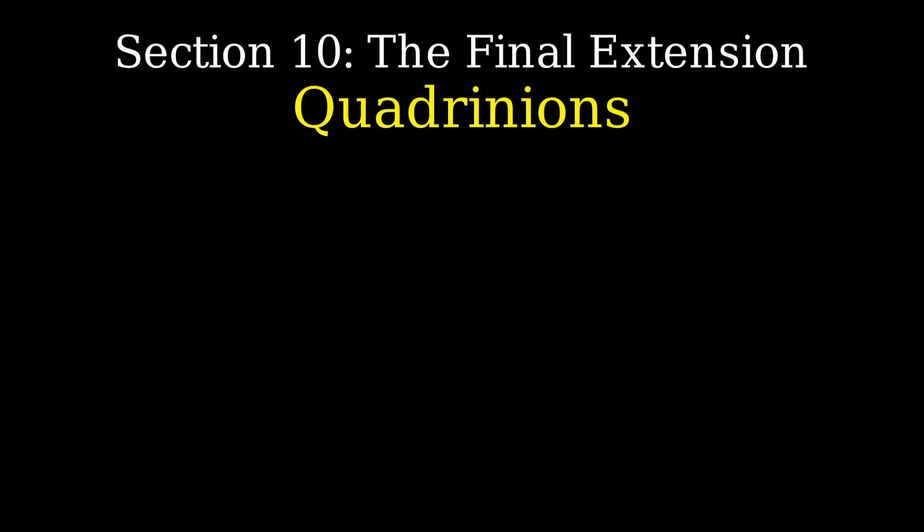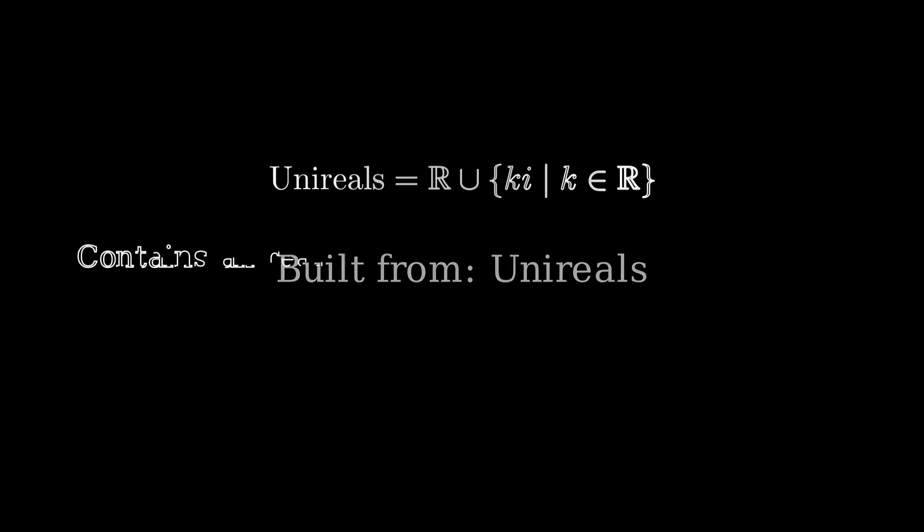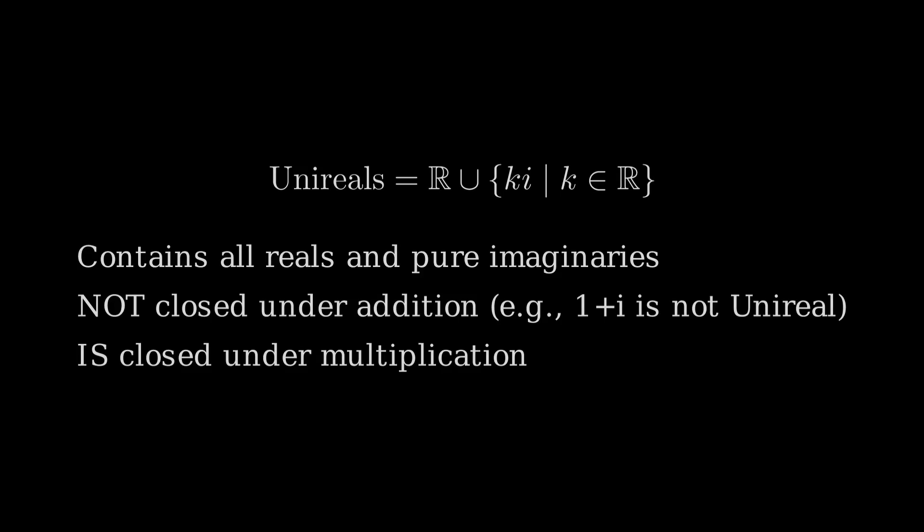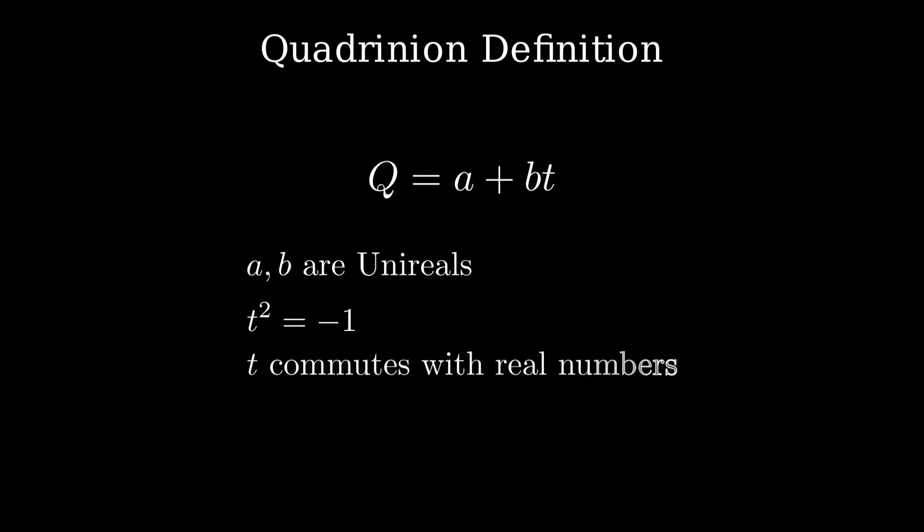In this final extension, we introduce a new structure called the quadrinion. It builds on a special set we call the uni-reals, a set containing all real numbers and pure imaginaries of the form k times i, where k is real. Interestingly, uni-reals are not closed under addition. For instance, 1 plus i is not a uni-real, but they are closed under multiplication. A quadrinion is defined as a plus b times t, where both a and b are uni-reals, and t is a new unit satisfying t squared equals negative 1, like i. t commutes with real numbers. With this, we reach a system that stretches beyond the complex plane while remaining algebraically rich.